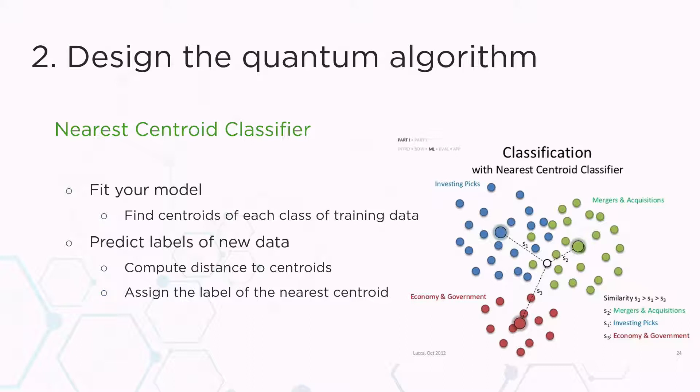So what is the nearest centroid classifier? It's a pretty simple algorithm. We have different types of data points. Here, we have blue, green, and red points. And what we do when we want to fit the model is that we find the centroid, the body center, of these points. In some sense, the average blue, green, and red point. And what we do is that when a new point comes into the system, this white dot which is there in the middle, we estimate the distance between this new point and the centroids from the different clusters, and we assign to the white point the label that corresponds to the nearest centroid. In our example, the green color.